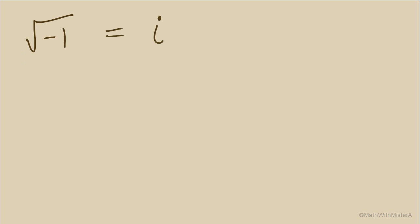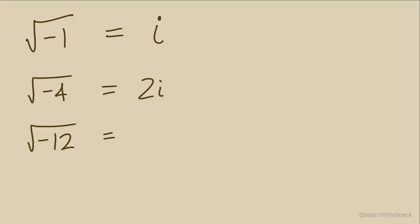We first use complex numbers to talk about square roots of negative numbers. We know that these are not real numbers. We have a way of representing these numbers using the letter i. The square root of negative 1 we define as equal to i. From there, we can simplify other square roots of negative numbers. Since the square root of 4 equals 2, the square root of negative 4 equals 2i. And if we encounter radicals that are irrational, we would still like to simplify them. For example, the square root of negative 12 equals 2 radical 3i.